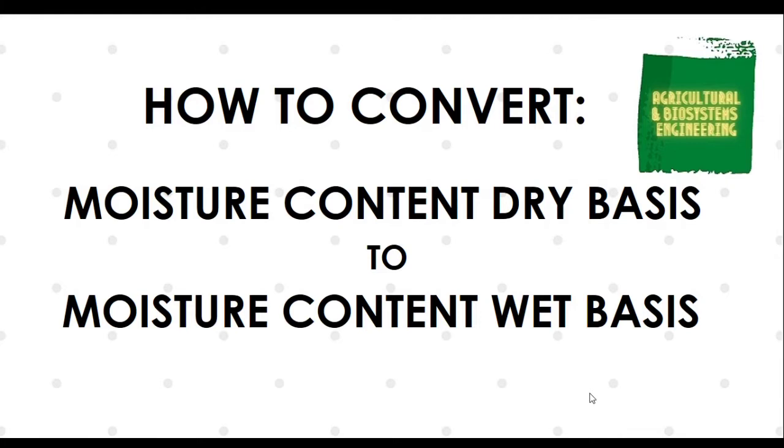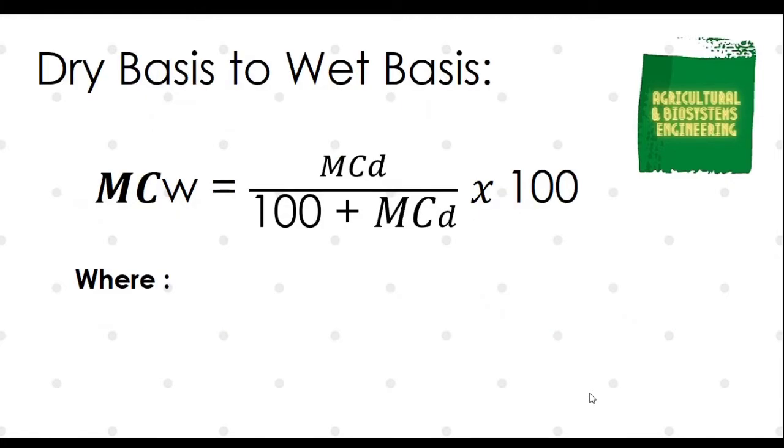The formula to be used in converting Moisture Content Dry Basis to Wet Basis is: MCW equals MCD all over 100 plus MCD, multiplied by 100.